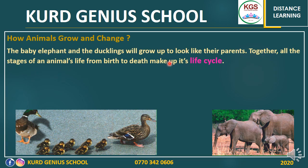I'm going to start with some animals like duck and elephant. How do animals grow and change? The baby elephant and the ducklings will grow up to look like their parents. It means that they look like their parents from the first stage, or after coming out from the egg. Just look at the ducklings — they look like their mom. And also look at the small elephant; it looks like the big elephant.